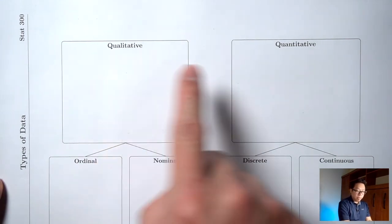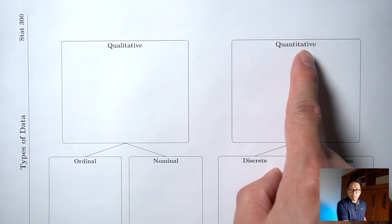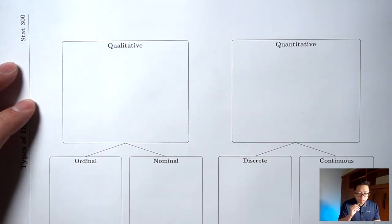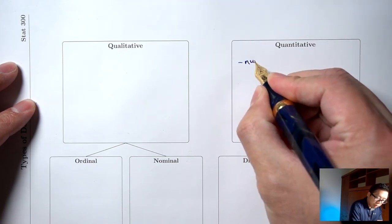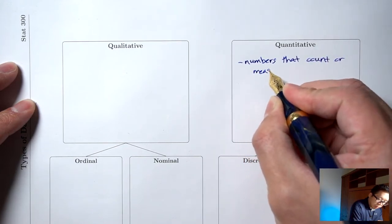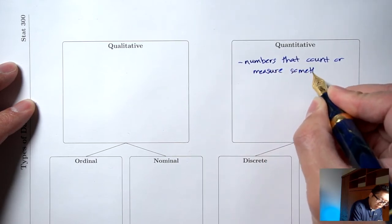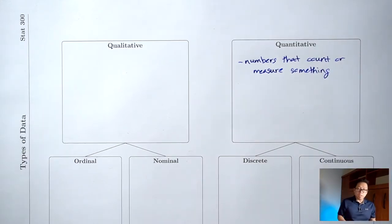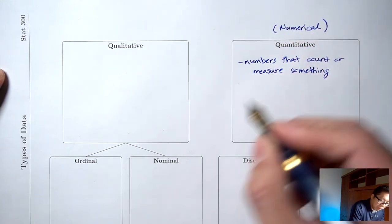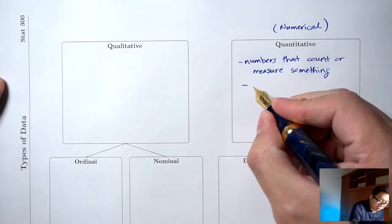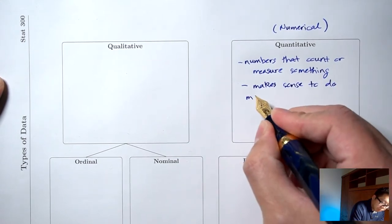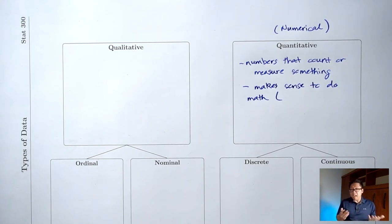There are two main types of data: qualitative and quantitative. I'm going to start with quantitative. The word quantitative comes from the word quantity, which means how many. So quantitative data are going to be numbers — numbers that count or measure something. And because they are numbers, it's going to make sense to do math with these numbers, things like taking an average or subtracting.